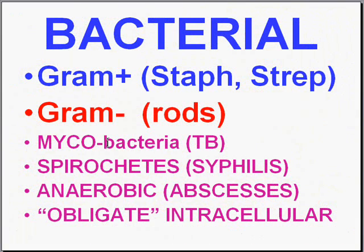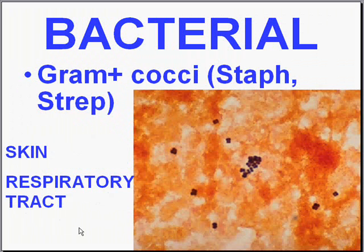We're done with viruses — let's get into bacteria. The general classification of bacterial infections: gram-positive bacteria are primarily cocci, gram-negative are primarily bacilli, though there are exceptions for each group. Then there are groups that don't stain, like the mycobacteria, which require a special Ziehl-Neelsen or acid-fast stain. Spirochetes do not stain at all and are difficult to culture. Anaerobes can stain either gram-positive or gram-negative, most commonly gram-positive rods, and there is a family of obligate intracellular bacteria that can't be cultured.